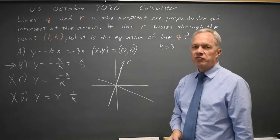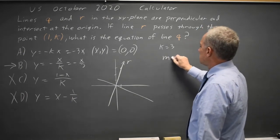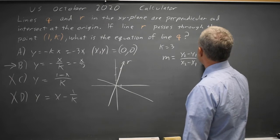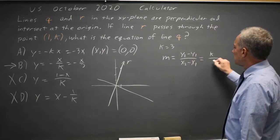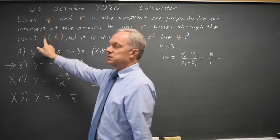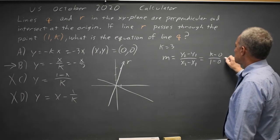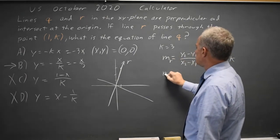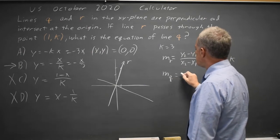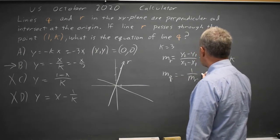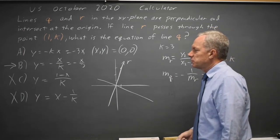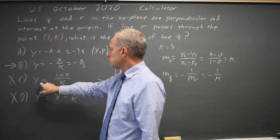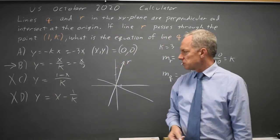Alternatively, we can find the slope. The slope is Y2 minus Y1 over X2 minus X1, putting in the point (1, K) where K is the Y value and 1 is the X value, and then the point (0, 0). The slope for line R is K. So the slope for line Q is negative 1 over the slope for line R, which is negative 1 over K. So the correct answer would be the one with slope negative 1 over K, which of these two choices is choice B. Choice C also has the same slope, but it does not pass through the origin, so we can eliminate that.